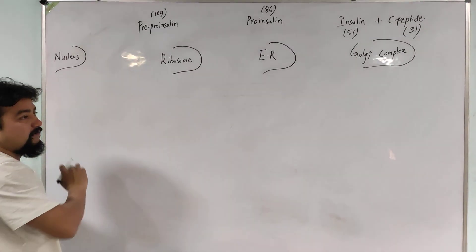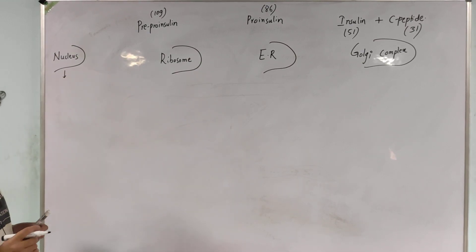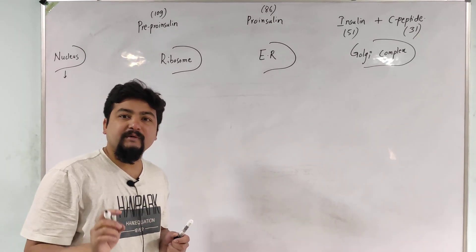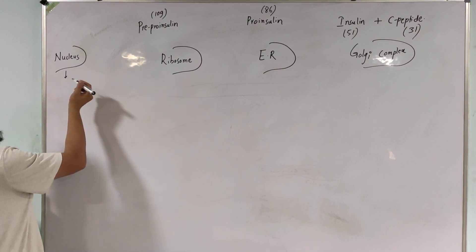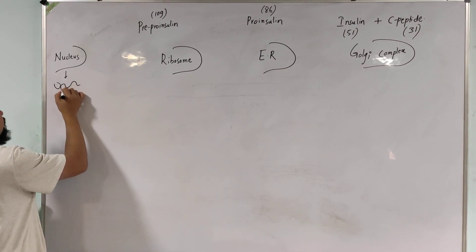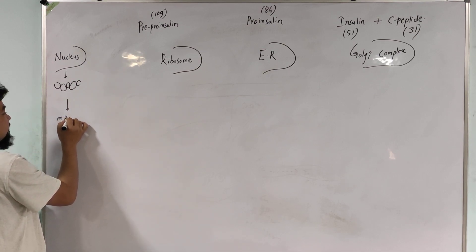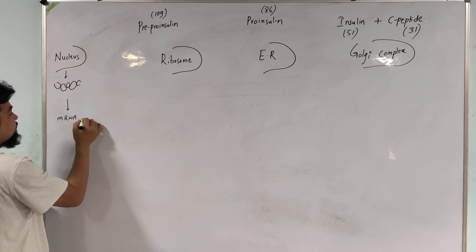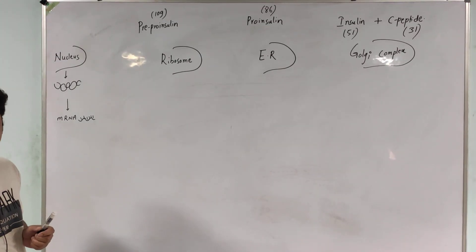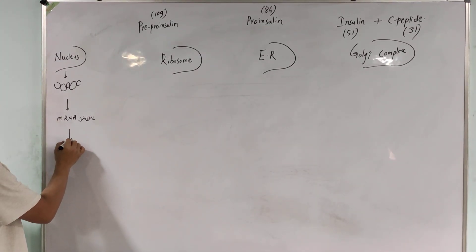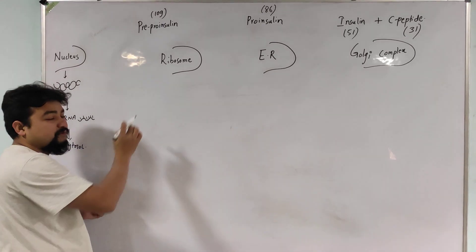Beginning from the nucleus: the gene responsible for insulin production is present on the short arm of chromosome number 11. From the chromosomal DNA, mRNA gets synthesized — this mRNA carries the message for the production of insulin. This mRNA then comes to the cytosol and moves toward the ribosome.